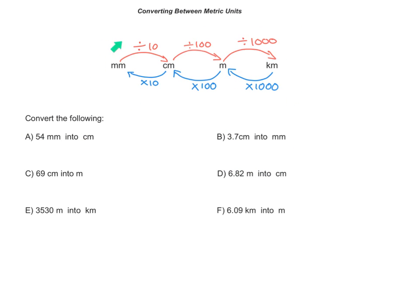Now let's use this conversion diagram to do some conversions. For the first question, we are asked to convert 54 millimetres into centimetres. We are converting smaller units into larger units, so we divide. When converting millimetres into centimetres, we divide by 10. So 54 divided by 10 is 5.4 — you move the decimal one place. So 54 millimetres is equivalent to 5.4 centimetres.